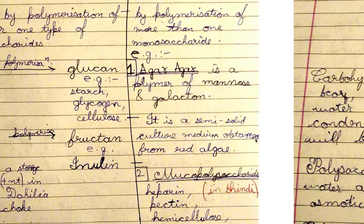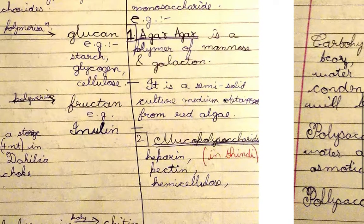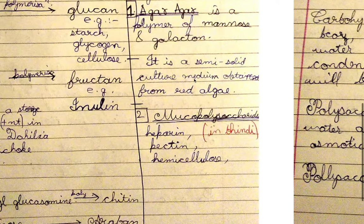Heteropolysaccharide examples are agar-agar and mucopolysaccharides. Agar-agar is a polymer of mannose and galactose — both are epimers of glucose. Mannose differs from glucose at carbon 2, and galactose differs at carbon 4. Agar-agar is a semi-solid culture medium obtained from red algae.